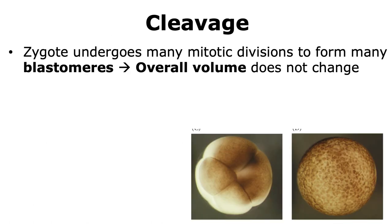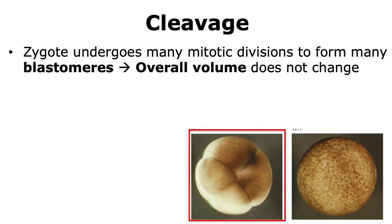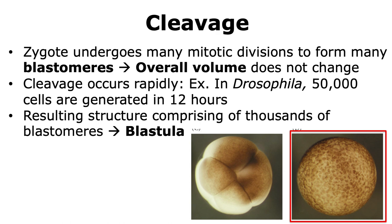Once the zygote is formed, it undergoes a series of mitotic divisions to form many cells called blastomeres. It should be noted that the overall volume of the zygote does not change — as shown in the picture, one zygote that has undergone two cell divisions to form four cells shows no change in overall volume, just more cells. The process of cleavage occurs fairly rapidly. For example, in the fruit fly Drosophila, 50,000 cells can be generated in a span of 12 hours.